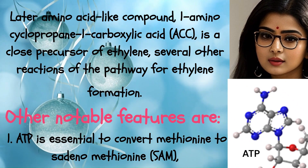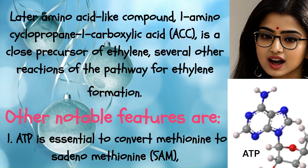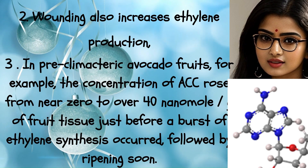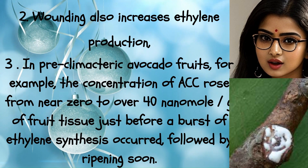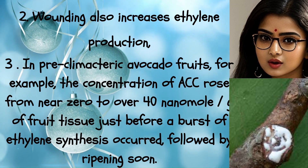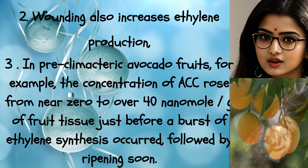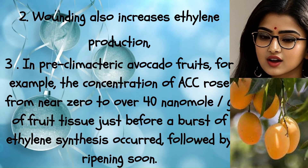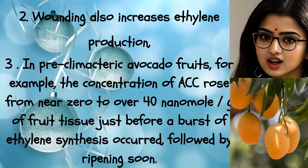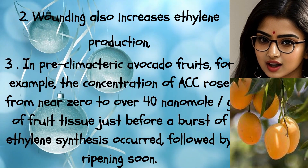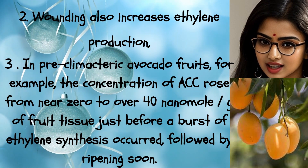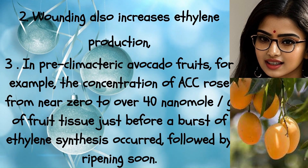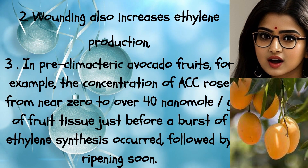Notable features of ethylene synthesis: ATP is essential to convert methionine to S-adenosylmethionine (SAM), and oxygen is needed in the final conversion of ACC to ethylene. Wounding also increases ethylene production. In preclimacteric avocado fruits, the concentration of ACC rose from near 0 to over 40 nanomoles per gram of fruit tissue just before a burst of ethylene synthesis occurred, followed by ripening soon after.